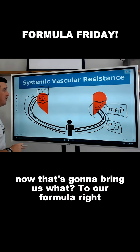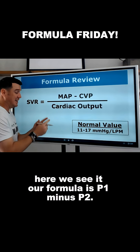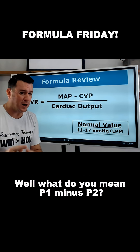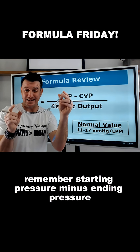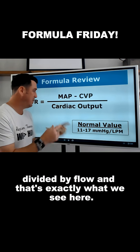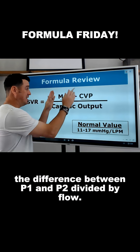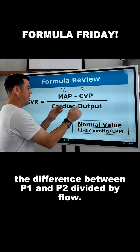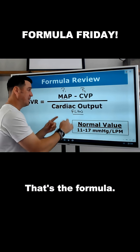That brings us to our formula. The formula is P1 minus P2 — starting pressure minus ending pressure — divided by flow. And that's exactly what we see here: MAP minus CVP, the difference between P1 and P2, divided by flow. That's the formula.